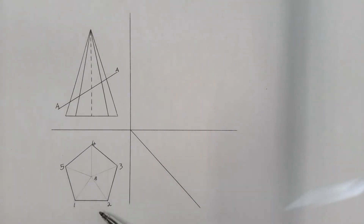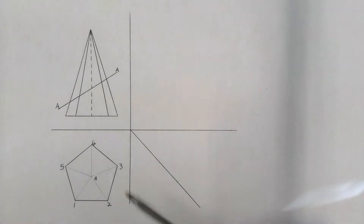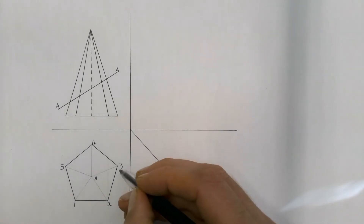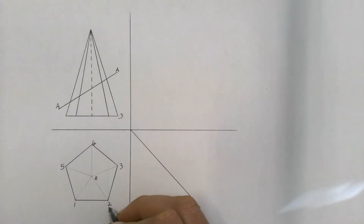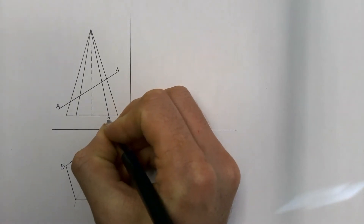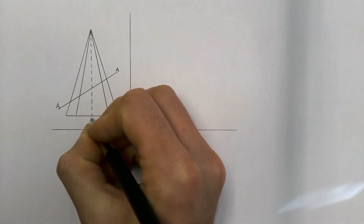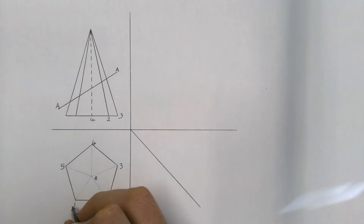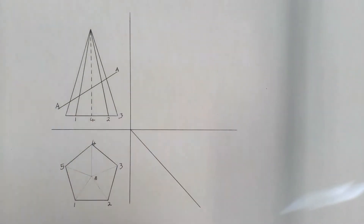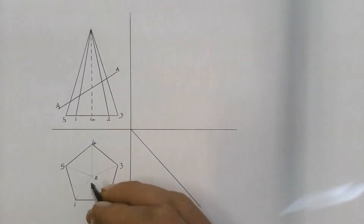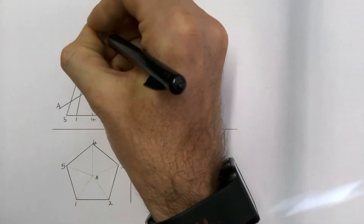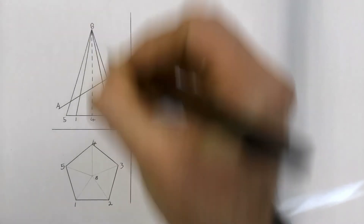Now that we've labeled our top view, we're going to transfer that labeling from the top view into the front view. Following our points: three projected up is three, two projected up is two, four projected up is four, one projected up is one, five projected up is five, and then of course the apex B is over there.